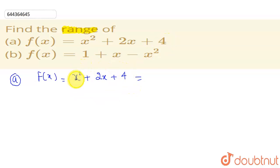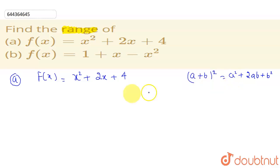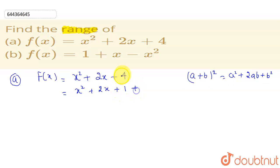In such questions, if there is a quadratic equation, you should try to make it a whole square term. The formula for (a + b)² is a² + 2ab + b². Here we have the a² term which is x², the 2ab term which is 2x, so a = x and b = 1. We need a b² term, so we break 4 as 1 + 3.